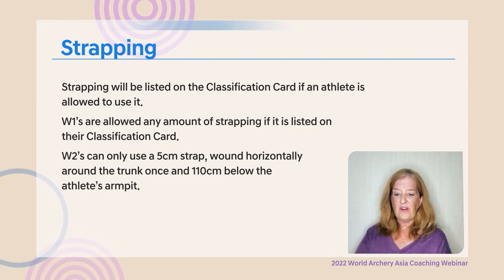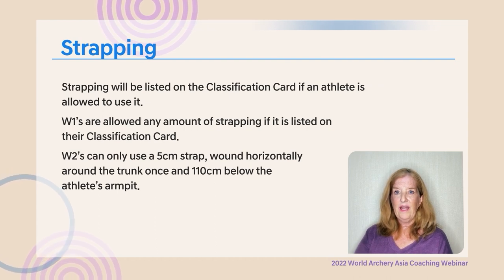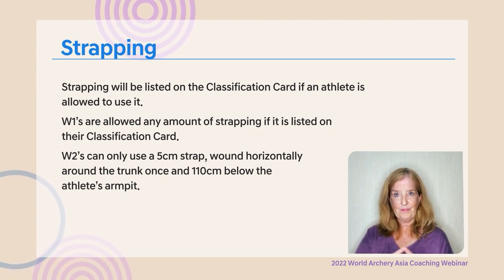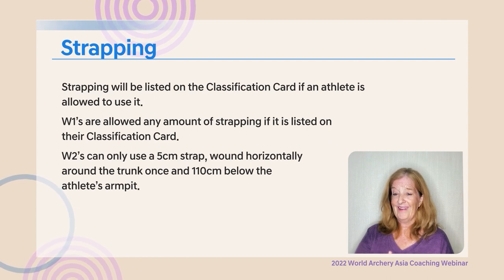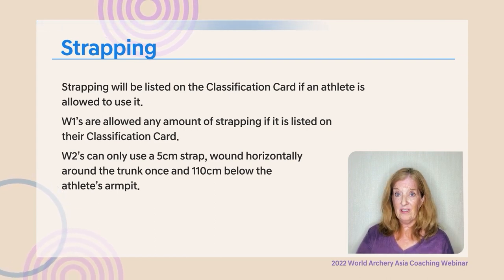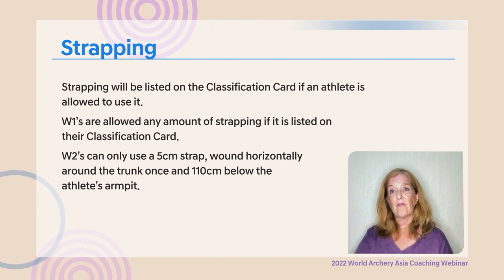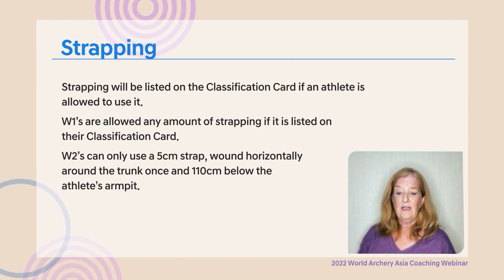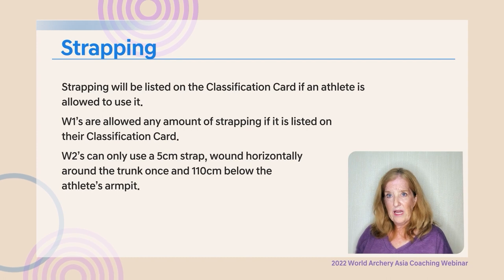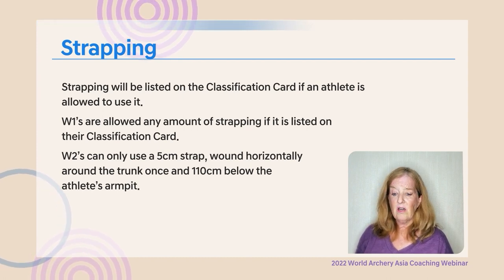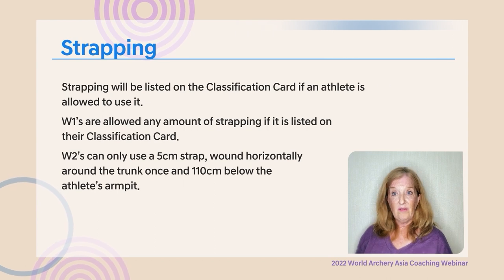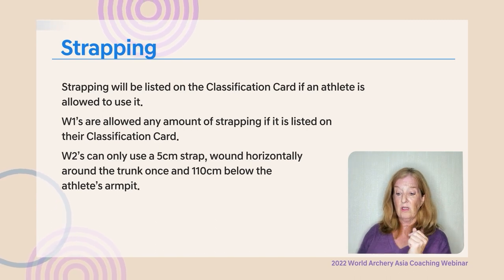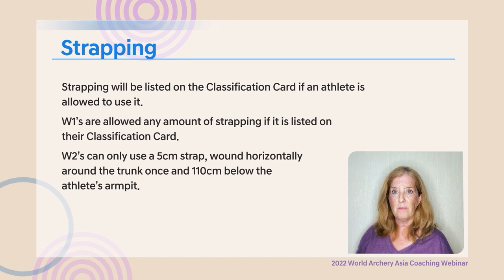Strapping must be listed on the classification card if an athlete is allowed to use it. Prior to March 2022, athletes needed approval to use strapping or lateral support, but now that all wheelchair archers can use lateral support, athletes who had strapping or lateral support authorized before March 2022 may still use their strapping. For W2s, strapping can only be five centimeters wide, wound horizontally once around the trunk, and must be 110 millimeters below the armpit.